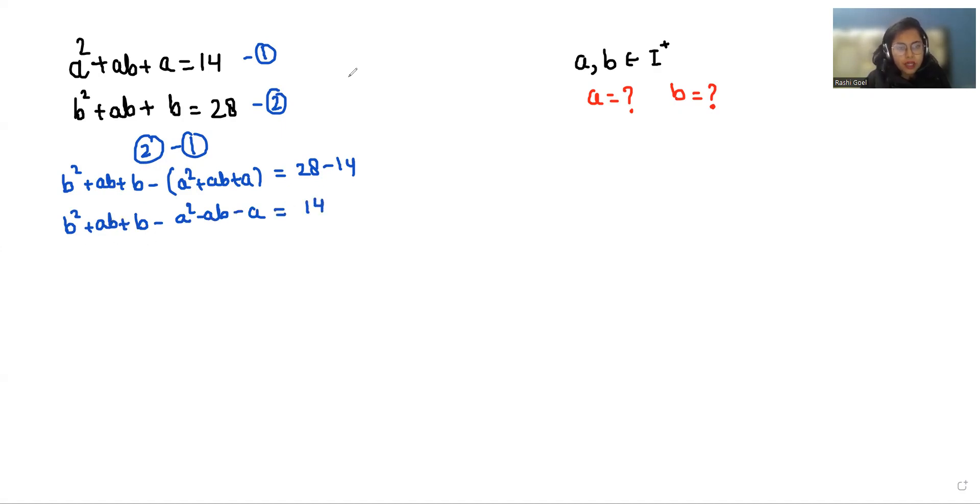Now we can eliminate this plus ab with minus ab. So what is left? b² - a² + b - a = 14.